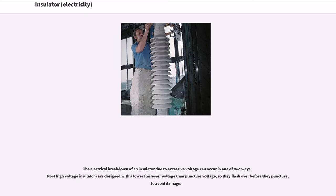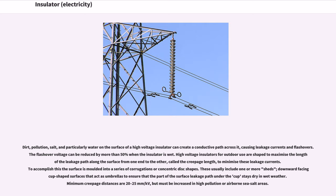The electrical breakdown of an insulator due to excessive voltage can occur in one of two ways. Most high-voltage insulators are designed with a lower flashover voltage than puncture voltage, so they flash over before they puncture, to avoid damage. Dirt, pollution, salt, and particularly water on the surface of a high-voltage insulator can create a conductive path across it, causing leakage currents and flashovers. The flashover voltage can be reduced by more than 50% when the insulator is wet.